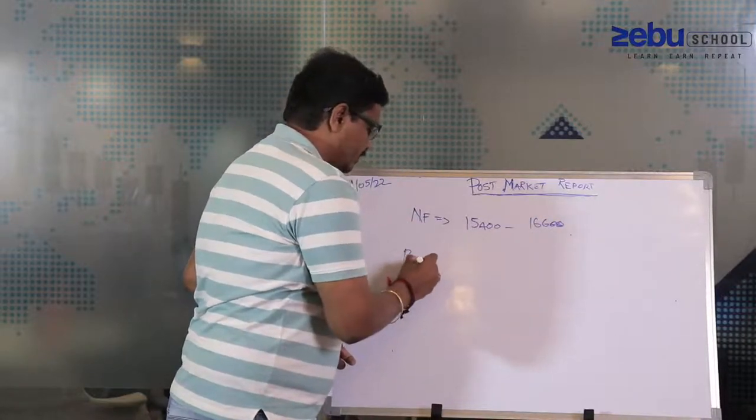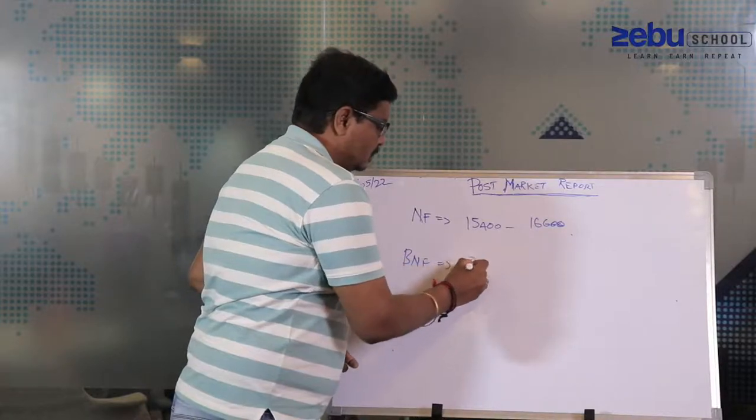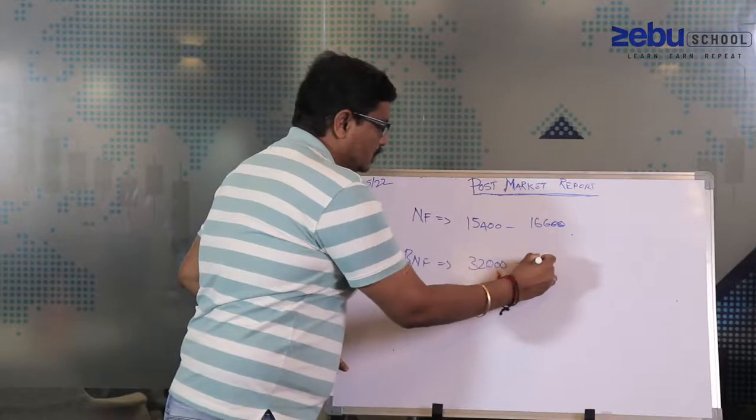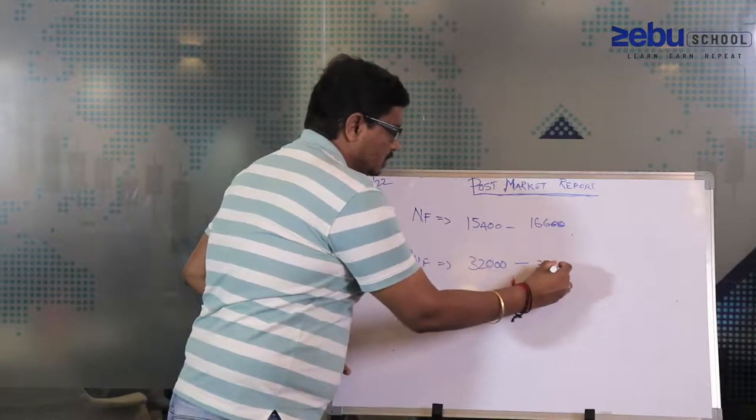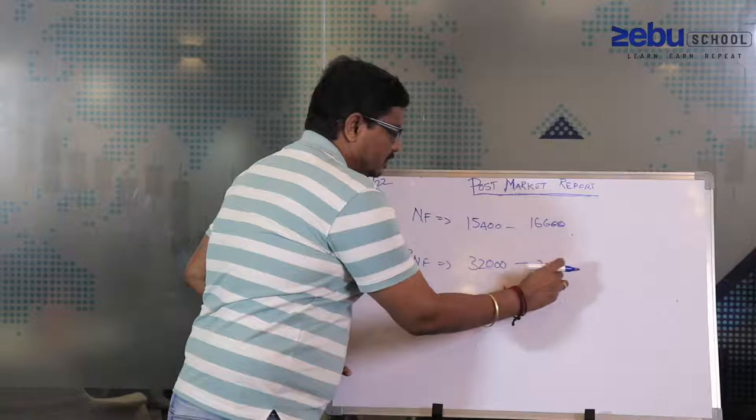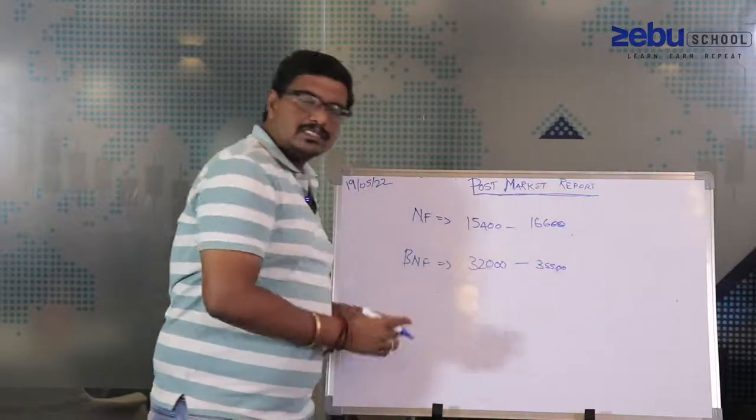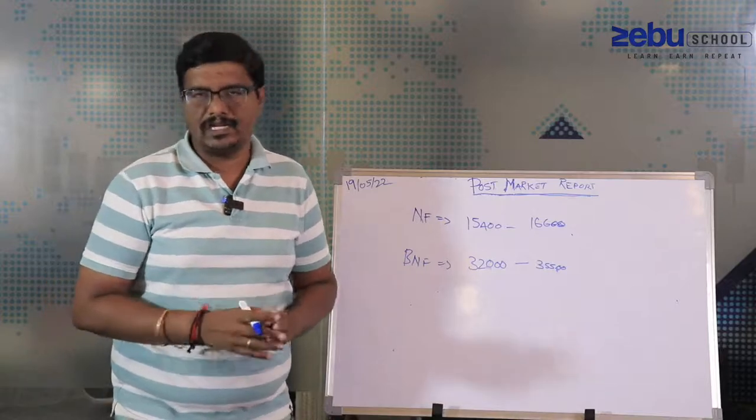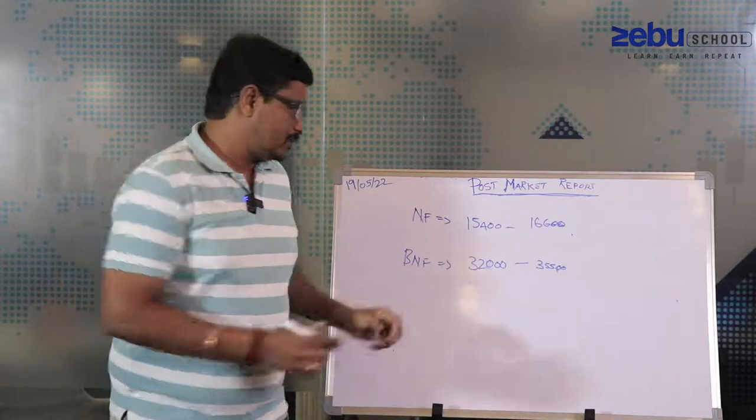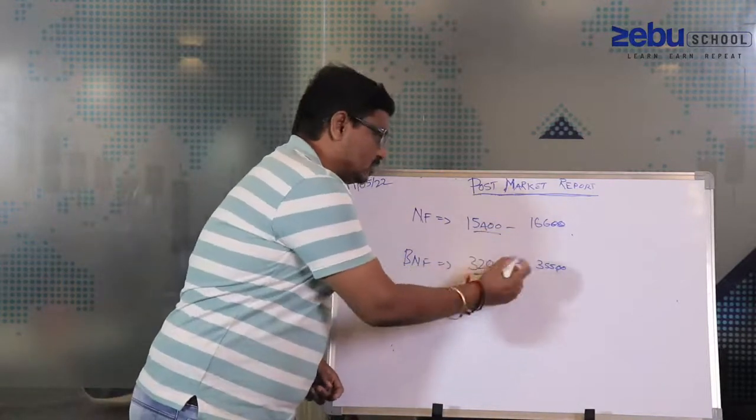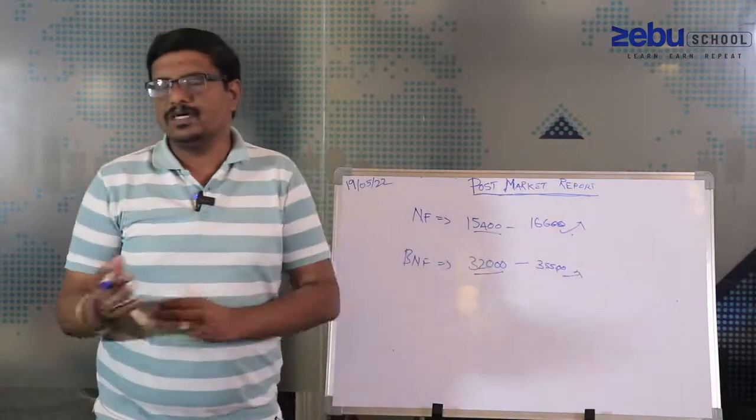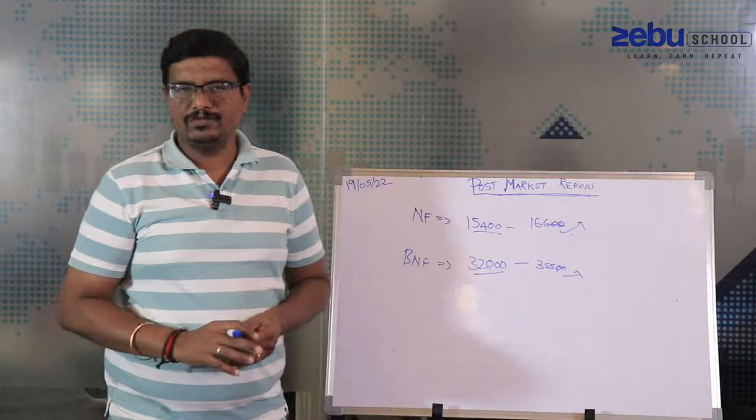For Bank Nifty, max you can use it as 32,000 and you can call it as 35,500. This is the broad range which I'm planning to trade based on my technical analysis. When market breaks this low or high, you need to concentrate on your risk management.